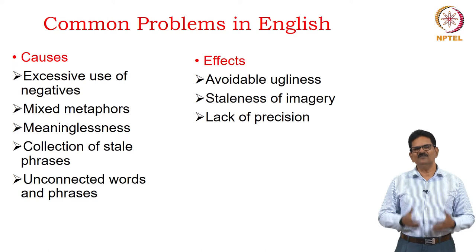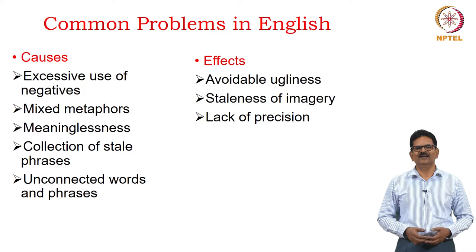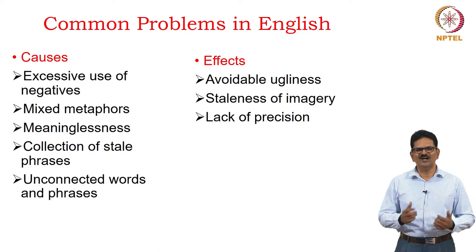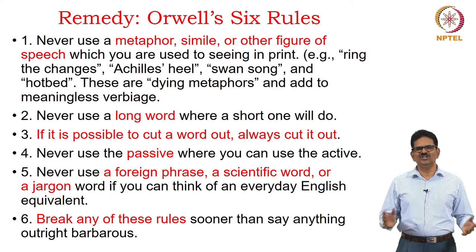If we avoid these problems, we can avoid ugliness in our writing, avoid staleness of imagery, and avoid lack of precision — meaning we can aim at precision, use fresh imagery, and use beautiful language. It is possible, but we have to think carefully and clearly with some hard work of mind and heart. To avoid all these problems, George Orwell gives us six golden rules.